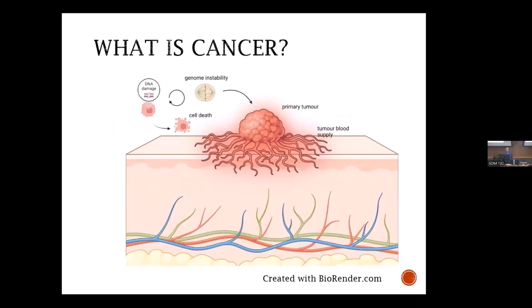I wanted to do a fairly basic introduction to what is cancer. Cancer is certainly developing as a result of mutations, and what this schematic is attempting to show is that damage to our DNA and our genome is happening all the time. Every time our cells divide, there is that element of risk where damaged DNA needs to be repaired in order for that damage not to be passed on to daughter cells. We're fortunate that in most cases, DNA damage can be sensed and triggers different forms of cell death, and so we have these important checkpoints in our cells that can prevent this damage leading to cancer.